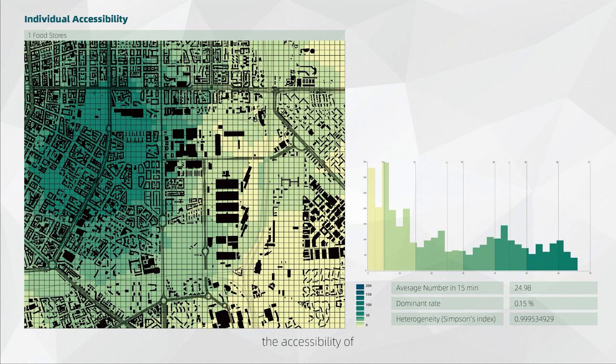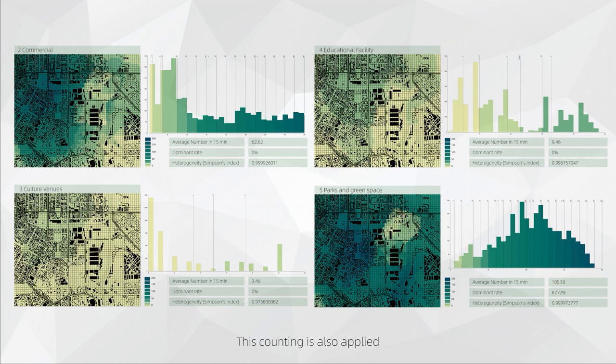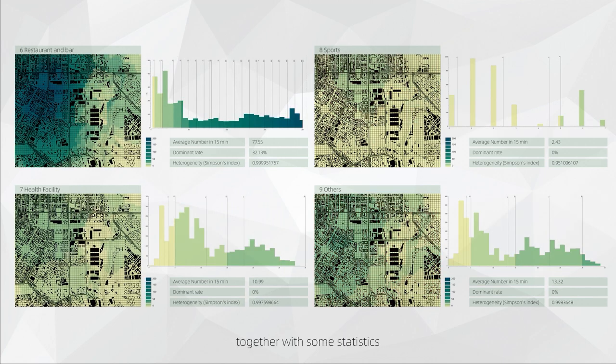Before that, let's take the accessibility of Category 1, Food Store, as an example. The cells in the left zones can reach around 60 food stores in 15 minutes, but at the right side, the value is less than 5. Some cells are not even able to reach one store at all. This counting is also applied to other categories, together with some statistics on average numbers and heterogeneity.